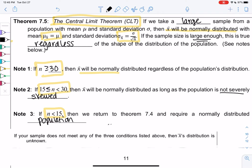If your sample does not meet any of these three requirements, then it's just unknown. It doesn't mean it's not normal, it just means we don't know. In the real world we'd probably collect more data to take care of that.